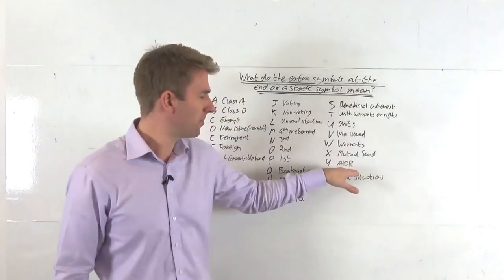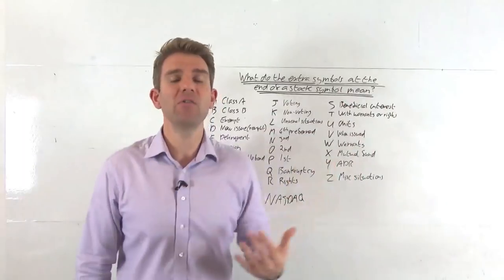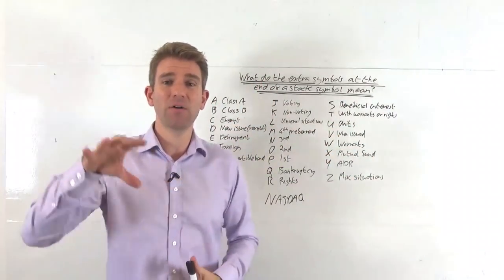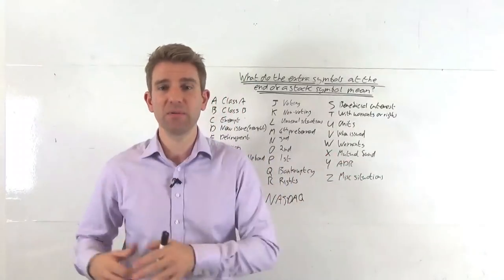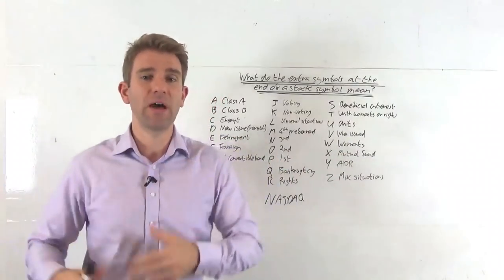ADR is American Depository Receipt. And that basically is a kind of a mirror of a stock that's trading on another exchange. So you might get an ADR for Vodafone. Vodafone trades on the London Stock Exchange. And the ADR would track its American Depository Receipt based on the value of the stock on that other exchange.